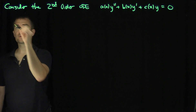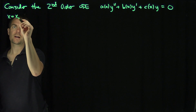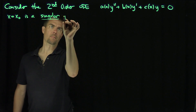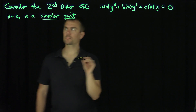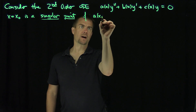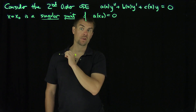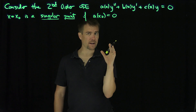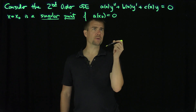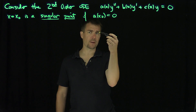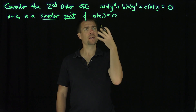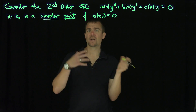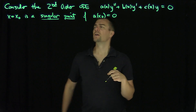This ODE has a singular point at x = x₀ if a(x₀) = 0. In other words, at that point, the effect of the second-order derivative no longer takes effect. This is important because in physical problems, the y'' term typically represents acceleration. So in most mechanical problems, if there's a point which cancels the effect of acceleration, you're reducing it dimensionally. That's a singular point.